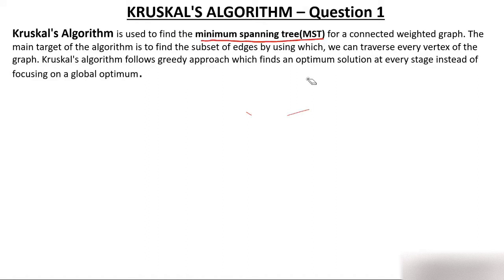In a graph there can be more than one spanning tree, but the minimum spanning tree will always be one. Their shape could be different, but the minimum weight will be only one. Kruskal's algorithm is used to find the minimum spanning tree for a connected weighted graph. The main target of the algorithm is to find a subset of edges by which we can traverse every vertex of the graph.